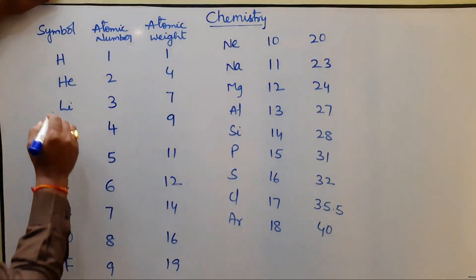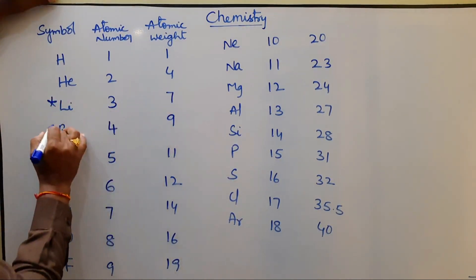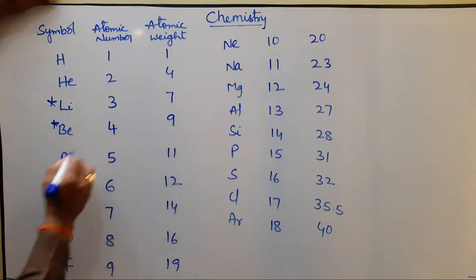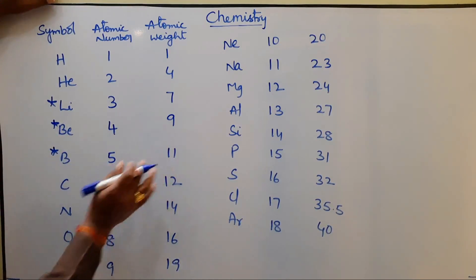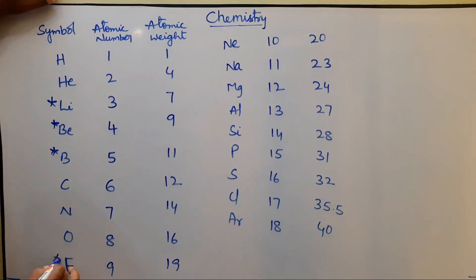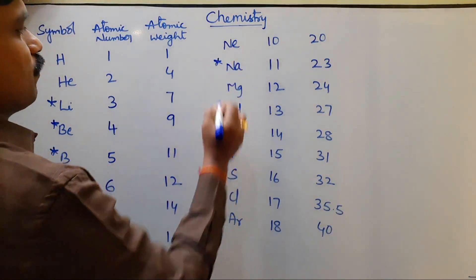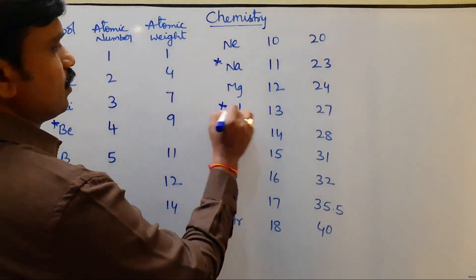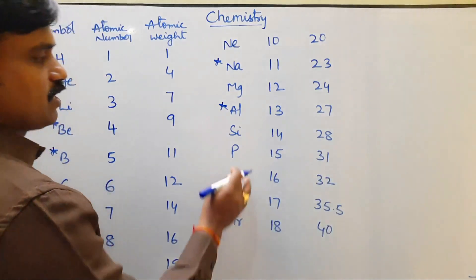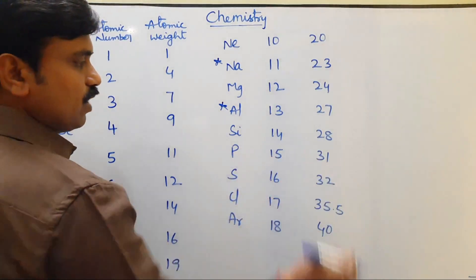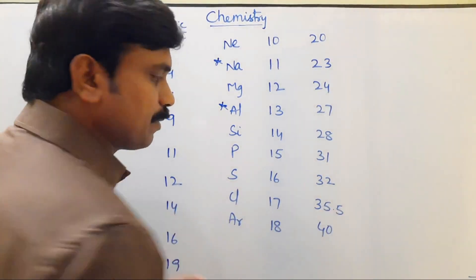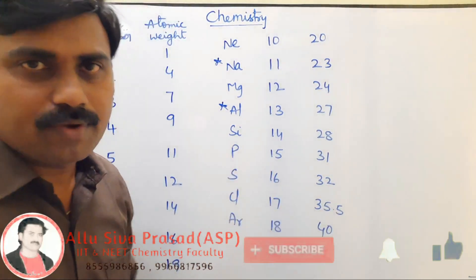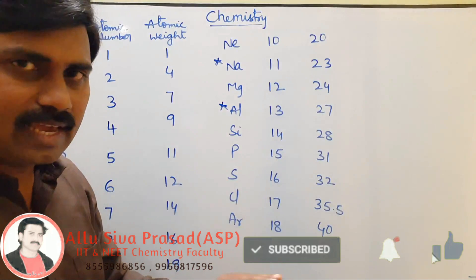For example: Lithium — double the atomic number plus one. Beryllium — double the atomic number plus one. Boron — double the atomic number plus one. Fluorine — atomic number nine, so double nine is eighteen plus one equals nineteen. Sodium — double its atomic number plus one. Aluminium — double atomic number plus one. Phosphorus — double atomic number plus one. Chlorine is a special case with a fixed atomic weight of 35.5 — you must practice this value and not neglect it.